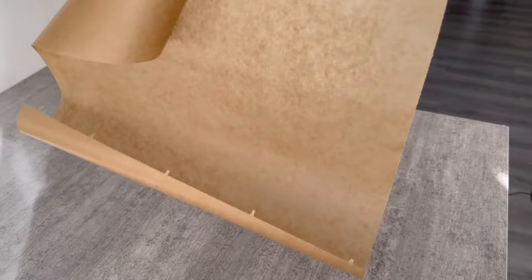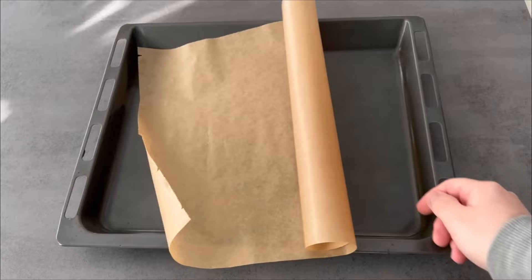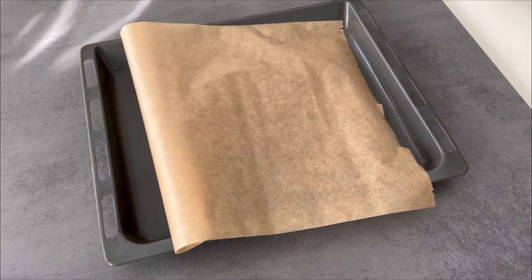When you take a piece of parchment paper, it is always rolled up like this. This means that if you want to put it on your baking tray now, it will usually roll up again. And even if you just turn it over and try to put it on your baking tray like that, you have the same problem. It will roll up somewhere.